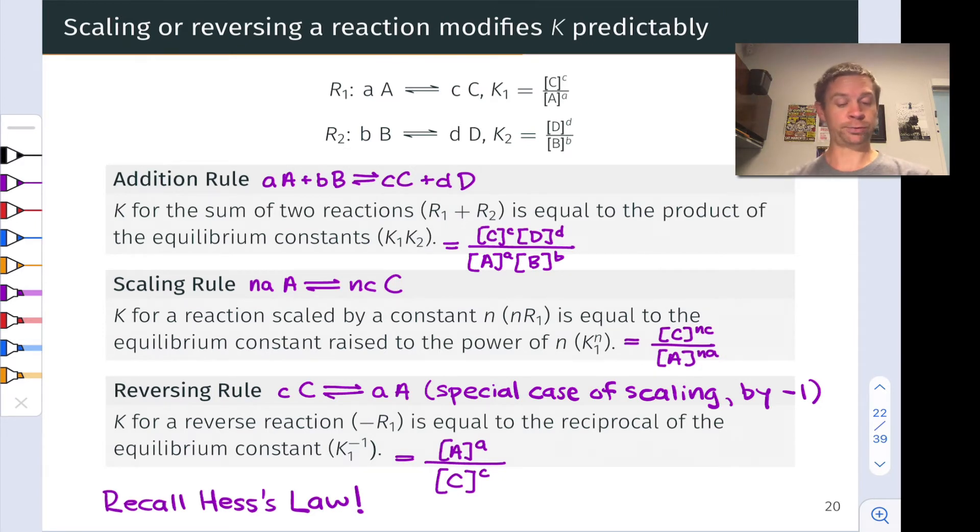So here, K for the reverse reaction, which we can think of as negative R1, is equal to the reciprocal of the equilibrium constant for reaction one, or K1 to the negative one power.